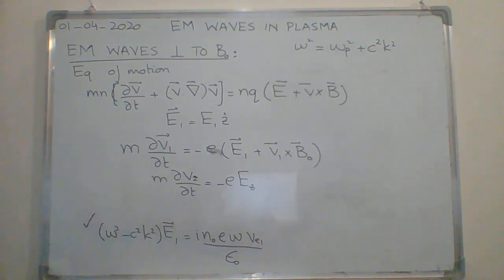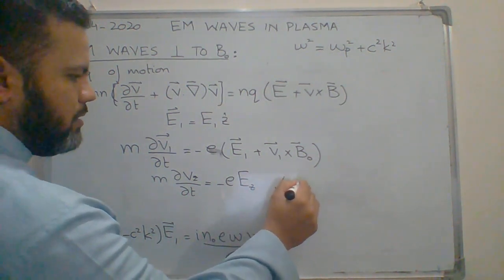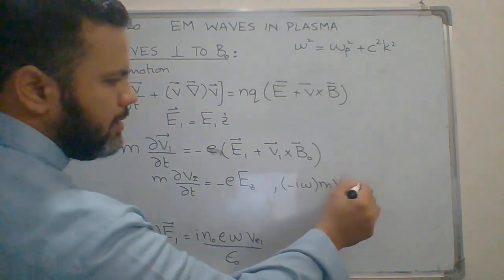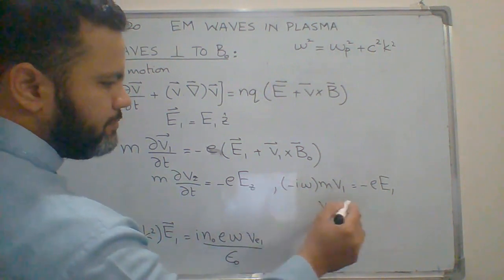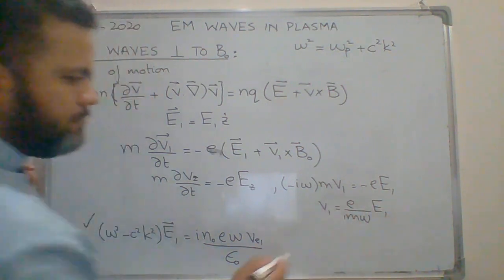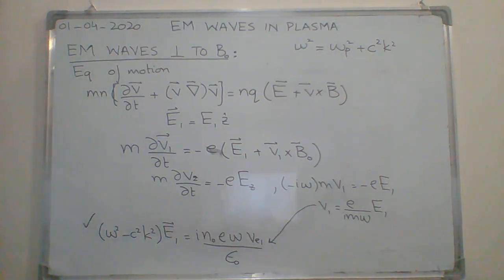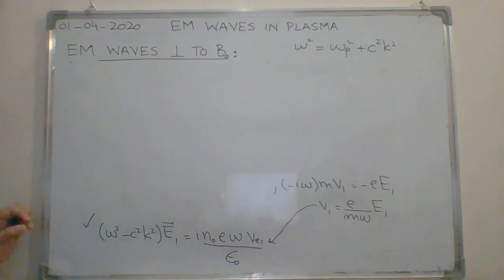Solving this equation using perturbed quantities oscillating as exponential of i·omega·t, we get minus i·omega·M·V1z equals minus e·E1z. From here we can write V1z equals e divided by M·omega times E1z. Substituting this back into the wave equation gives us the dispersion relation.